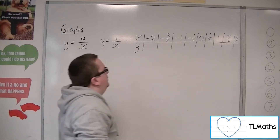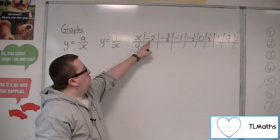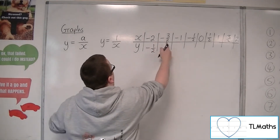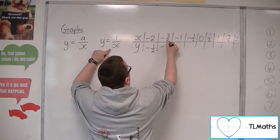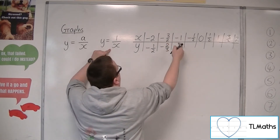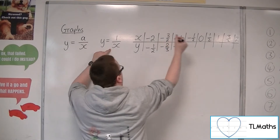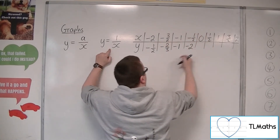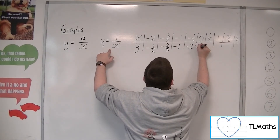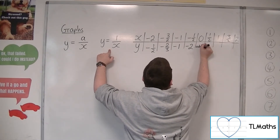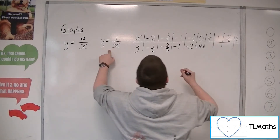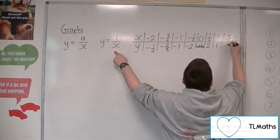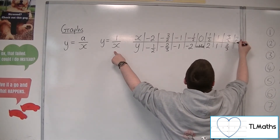So 1 over minus 2 is minus a half. 1 over minus 3 halves is minus 2 thirds. 1 over minus 1 is minus 1. 1 over minus a half is minus 2. 1 over 0 is undefined. 1 over a half is 2. 1 over 1 is 1. 1 over 3 halves is 2 thirds. And 1 over 2 is a half.